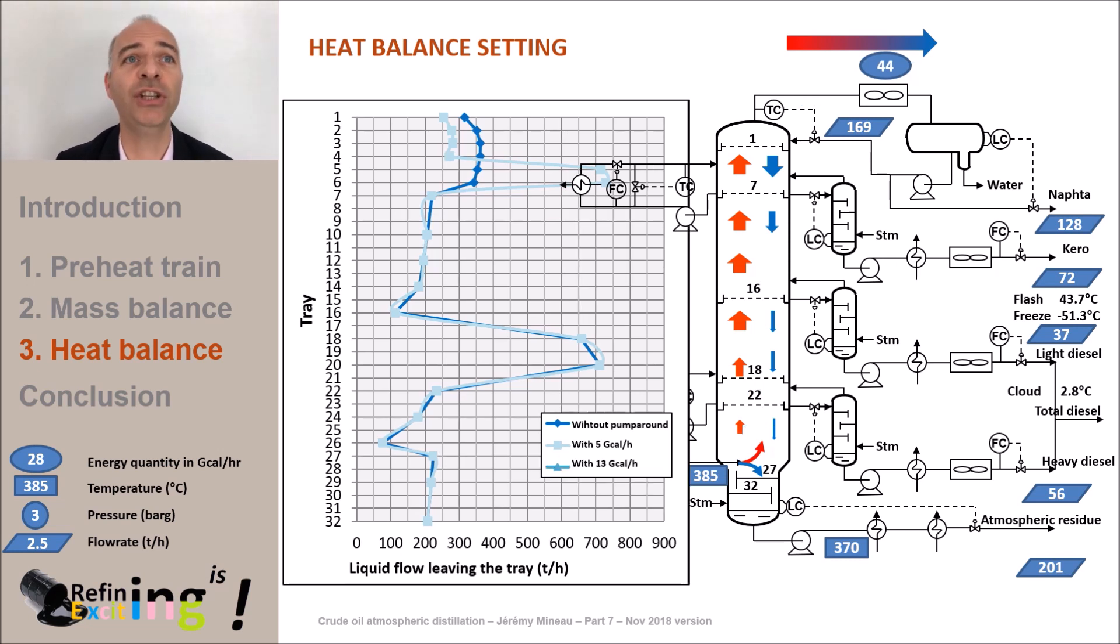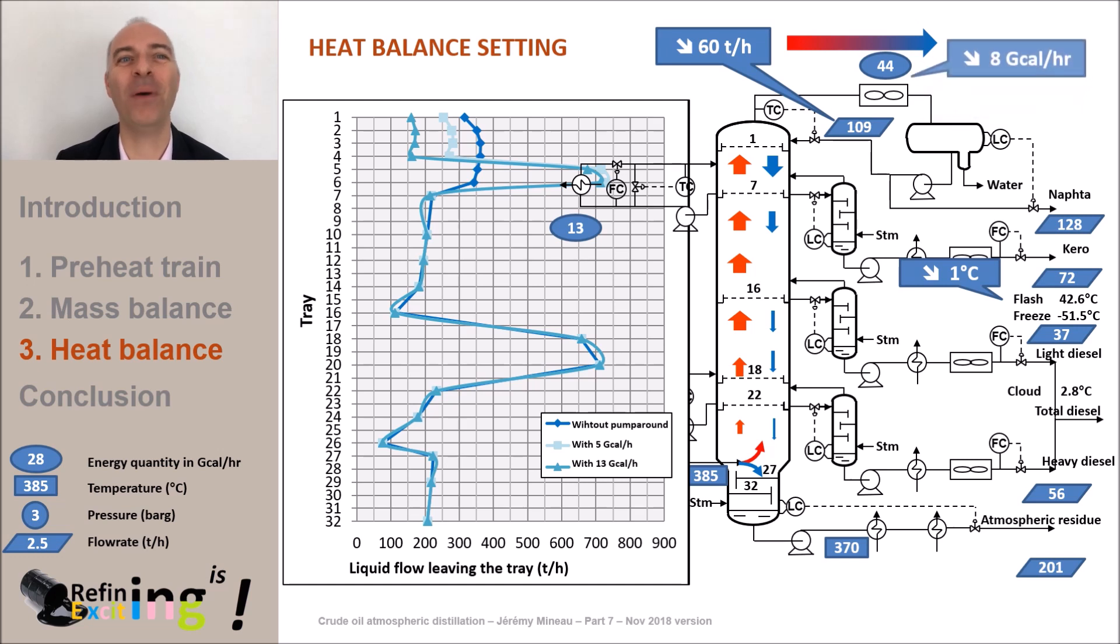Let's now continue to remove calories and this time let's target 13 gigacalories per hour. We always see the same consequences. The kerosene flashpoint is further reduced by 1 degree C and the reflux by 60 tons an hour. And the duty removed in the condenser is lowered by 8 gigacalories per hour.